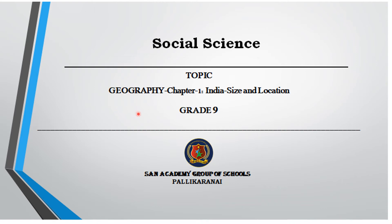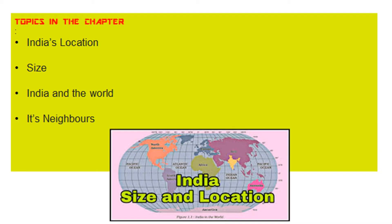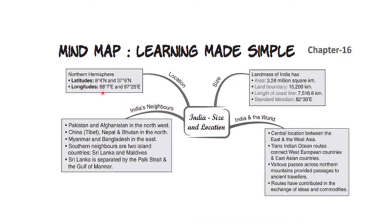Hello students, today we are going to discuss Social Science Grade 9 Geography Chapter 1: India - Size and Location. In this chapter we are going to read about important headings like India's location, size, India and the world, and its neighbors. This is a mind map of the content we are going to cover in the chapter.